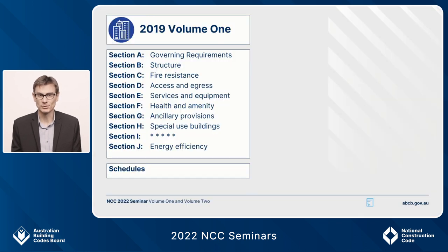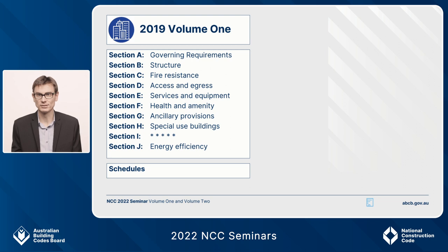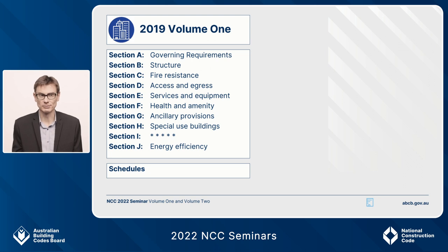The best way to describe the new referencing system is to compare it with the old one. Here I have Volume 1 NCC 2019 on this slide. At this high level, the structure starts with Section A, the Governing Requirements — that's where you've got the classifications in A6, evidence of suitability in A5. Then come the technical provisions starting with structure at Section B, fire resistance in Section C, and all the way down to Section J, Energy Efficiency.